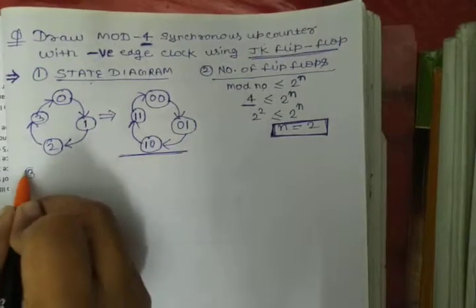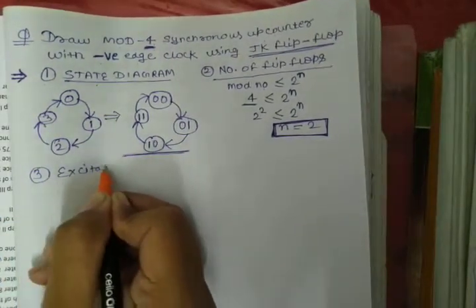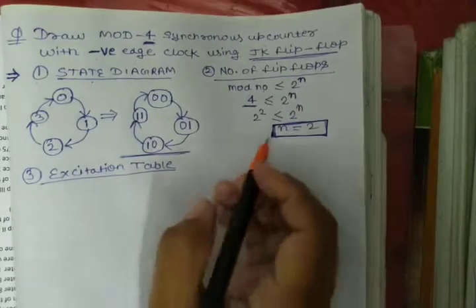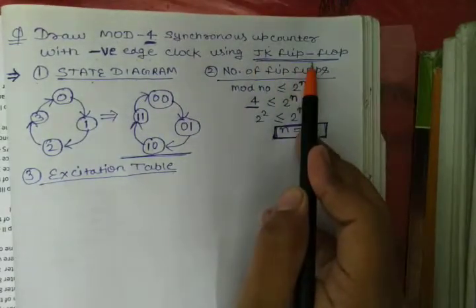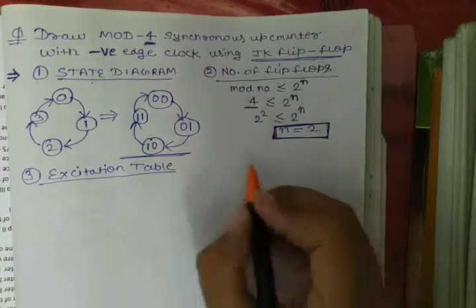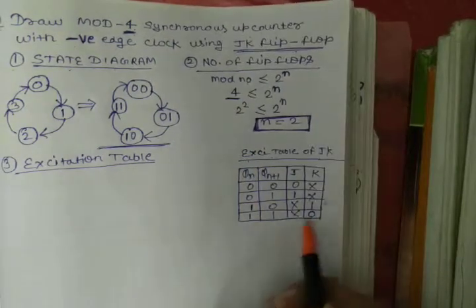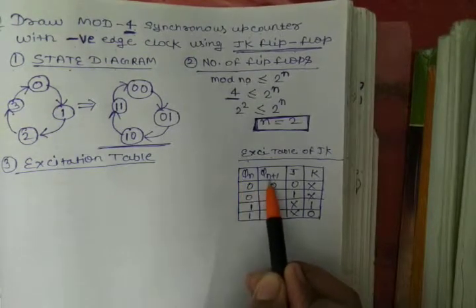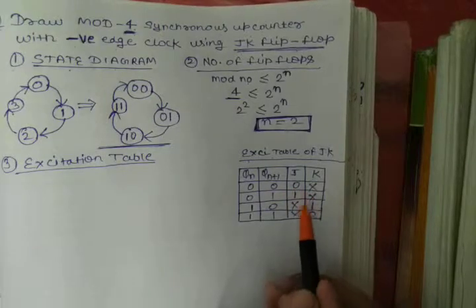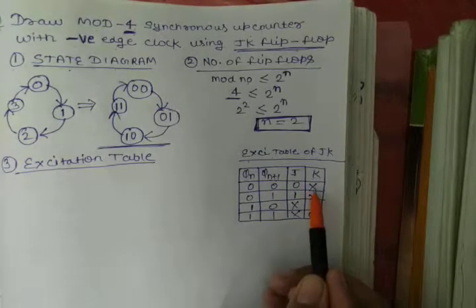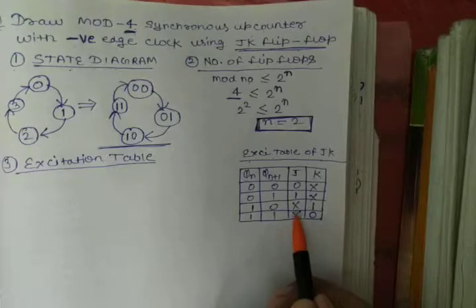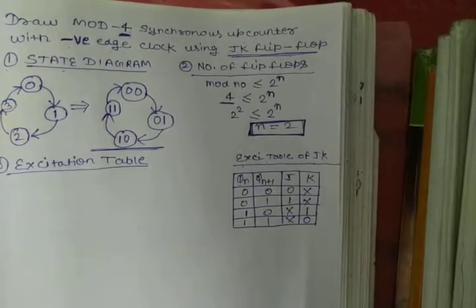Now we will move to our third step which is the excitation table. The excitation table for this is somewhat lengthy, but first draw the JK flip-flop excitation table as we have to make use of it. Here we have Qn and Qn+1 as previous state and next state, and J and K are the outputs.